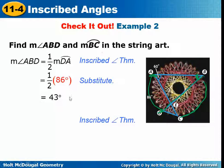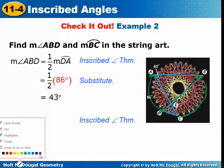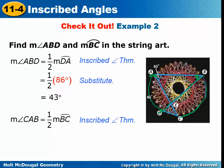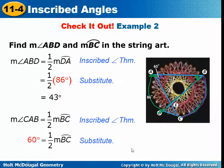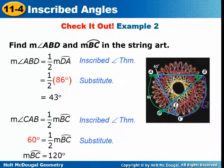For part two, they want the measure of arc BC. Going back to find its inscribed angle — it's 60 degrees. We plug in: 60 degrees equals half of the measure of arc BC. Multiply both sides by two, and we find that arc BC is 120 degrees.